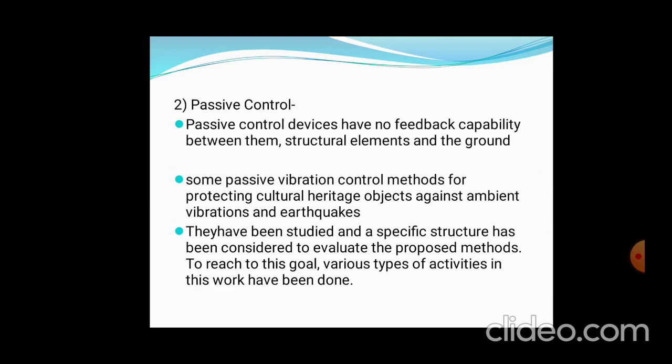In passive control, there is no feedback. In the active case, feedback is required, while in passive control no feedback is required — this is the key capability difference between them and structural elements. If there are structural vibrations, we consider no feedback. Some passive vibration control methods protect cultural heritage objects and artworks against ambient vibrations.